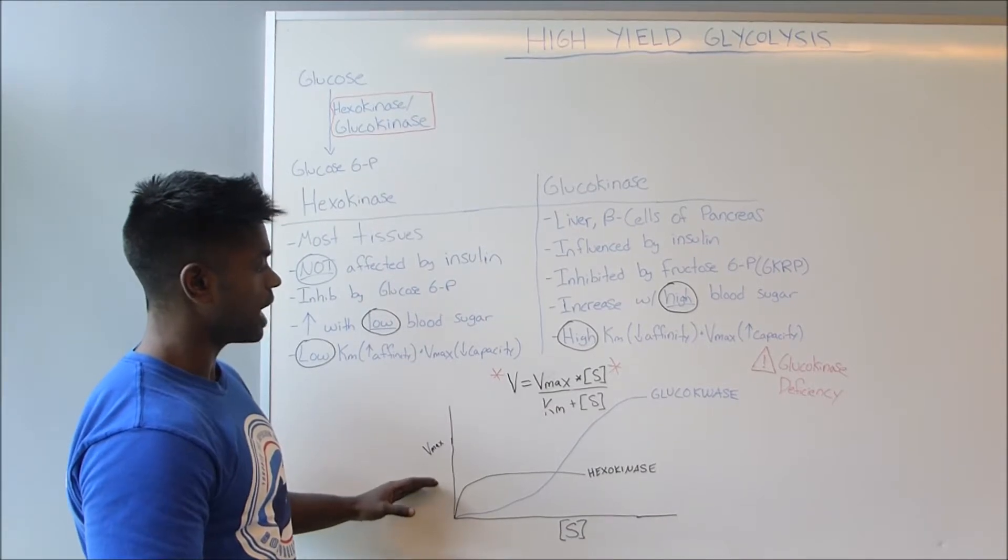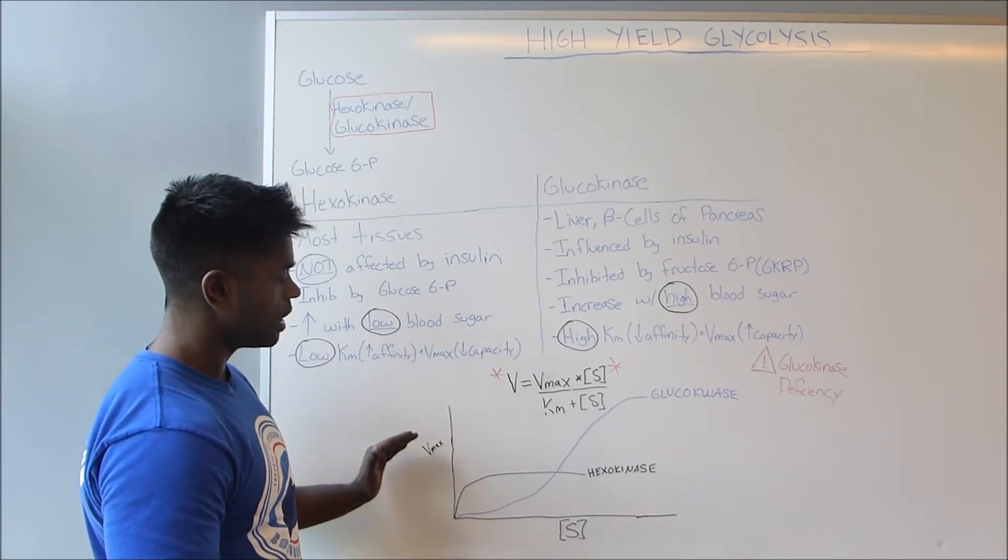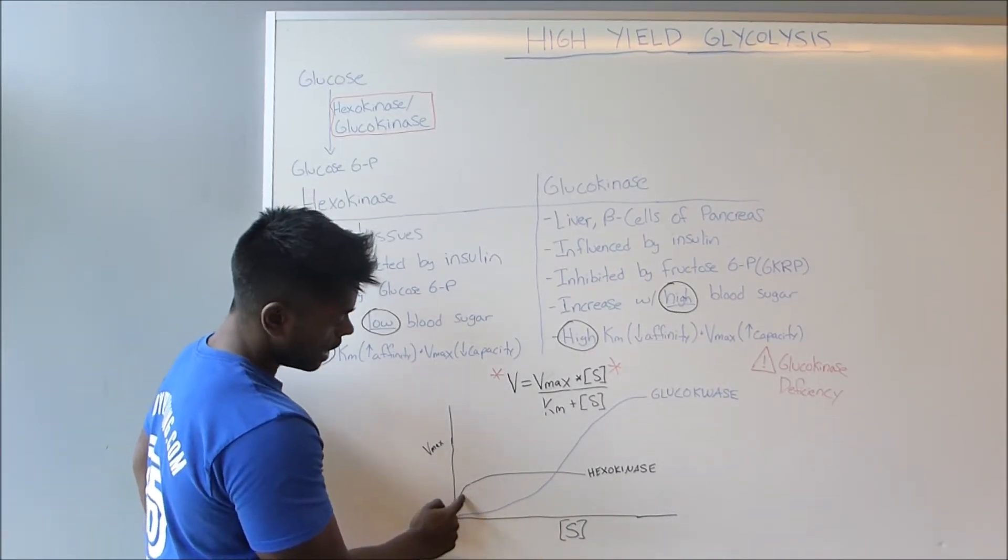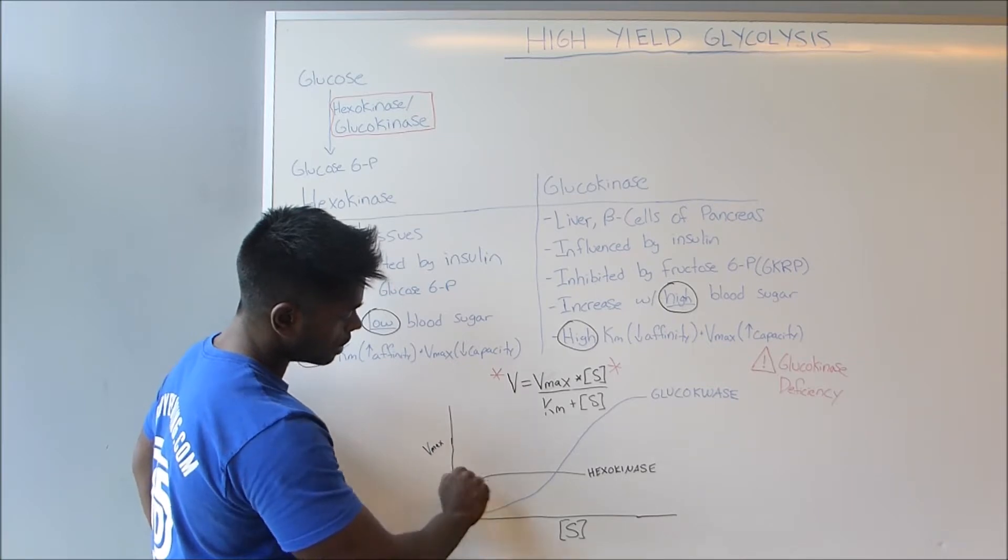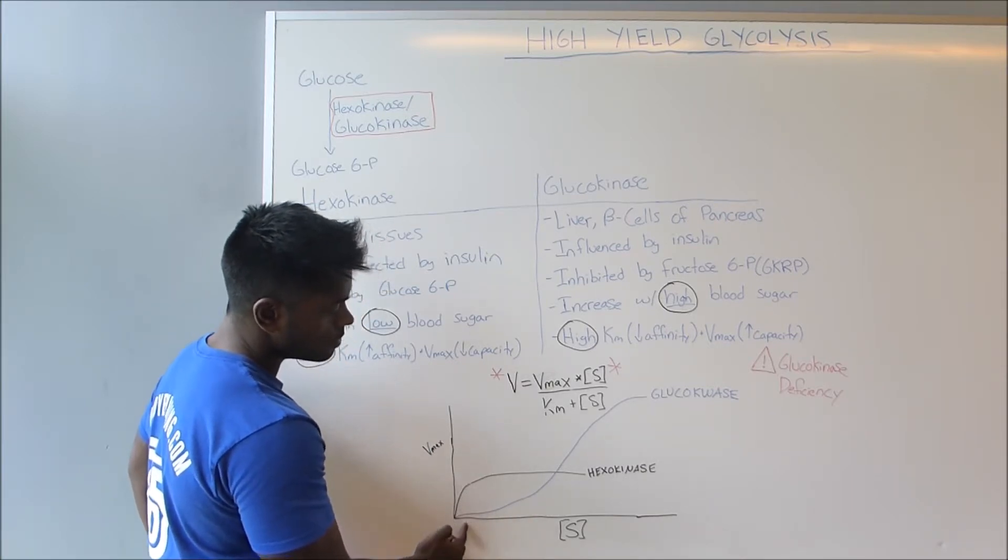Therefore, when you look at how the enzyme shows with respect to enzyme kinetics, you can see that this is hexokinase right here, that its Vmax, although it's very low, occurs at a very small substrate concentration.